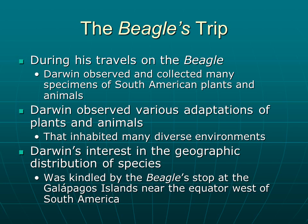During his travels on the Beagle, Darwin observed and collected many different specimens of plants and animals. As he traveled, he noticed various adaptations that these plants and animals had, and that they inhabited many different diverse environments. He started to notice different adaptations that different organisms had based on what type of environment they lived in. Darwin's interest in the geographic distribution of species was kindled by the Beagle's stop at the Galapagos Islands, where he watched and observed finches, noting differences in how they utilized their habitat and food sources.